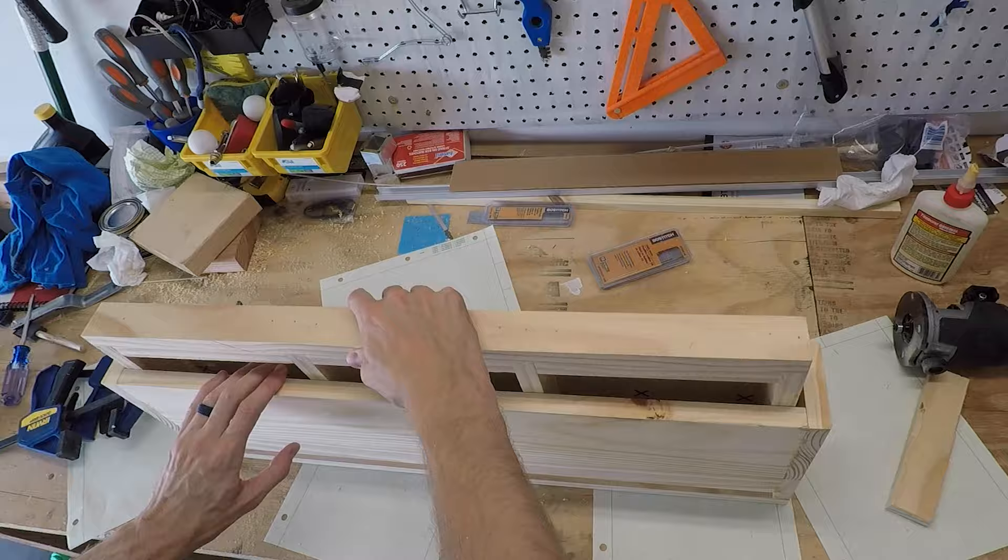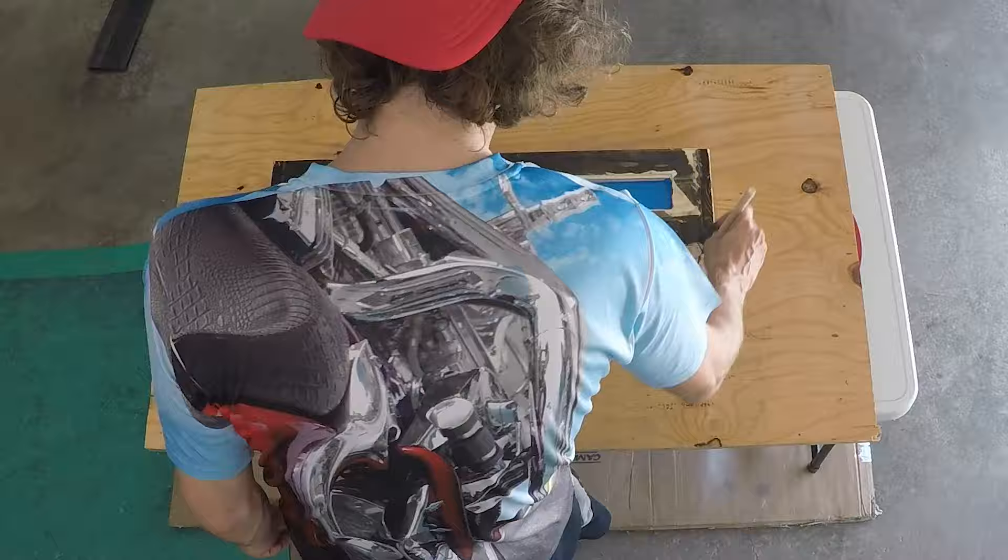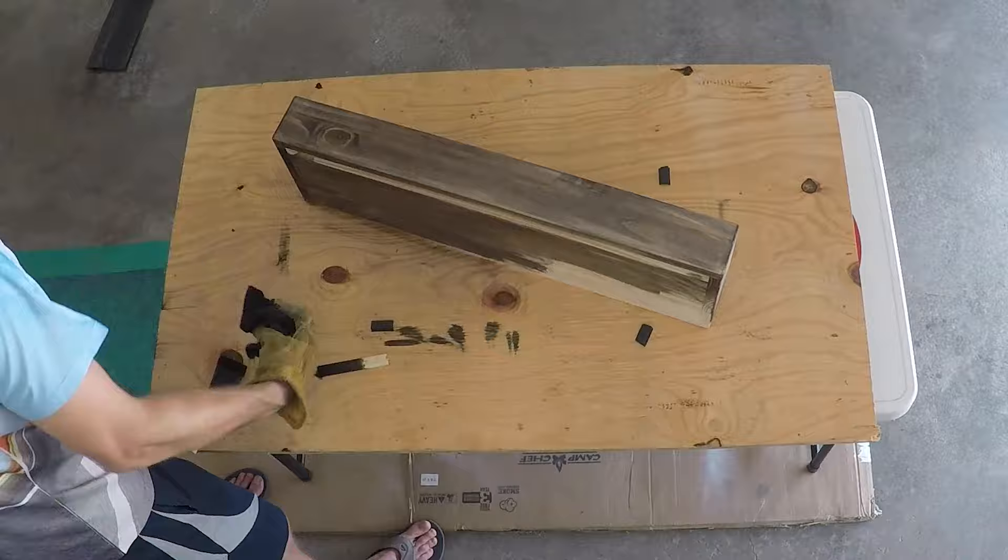Which brings us to staining the shelf and my second large mistake. Using an oil-based stain. Originally I was using a foam brush but it made it really blotchy, so I switched to putting it on with a sock and that ended up looking a lot better.